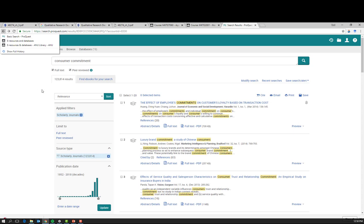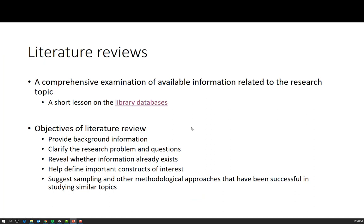So why do a literature review? We need background information, we need to clarify the research problem and questions, and we need to reveal whether information already exists. It helps define important constructs of interest — for example, is consumer commitment actually relevant and important to the study? And it can also suggest sampling and other methodological approaches that have been successful in studying similar topics. For instance, if you're looking at perceptions of taste, there will be other studies done on taste and you can look at the methods they've used and simply replicate those methods. You don't need to reinvent the wheel.